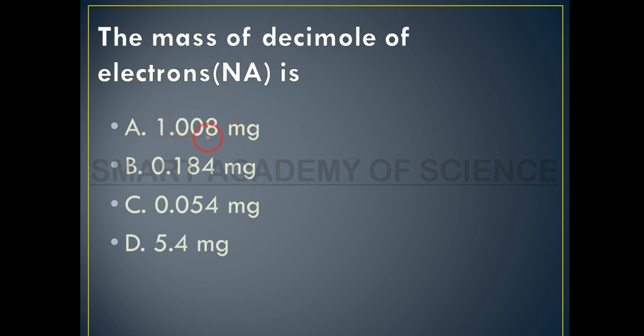Option D: we have 1.008 mg, 0.84 mg, 0.054 mg, and 5.4 mg. So now we have the options to solve.